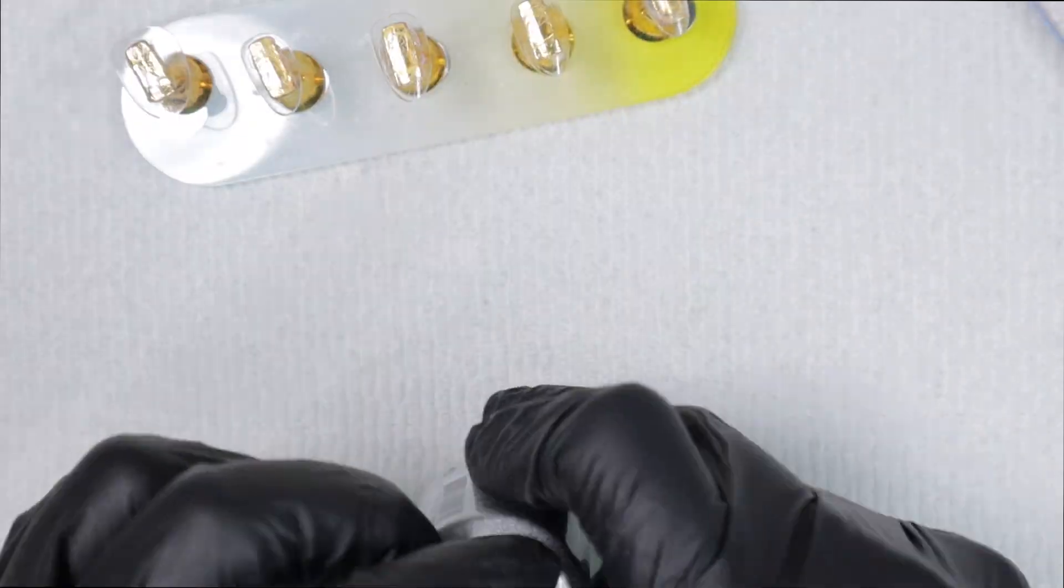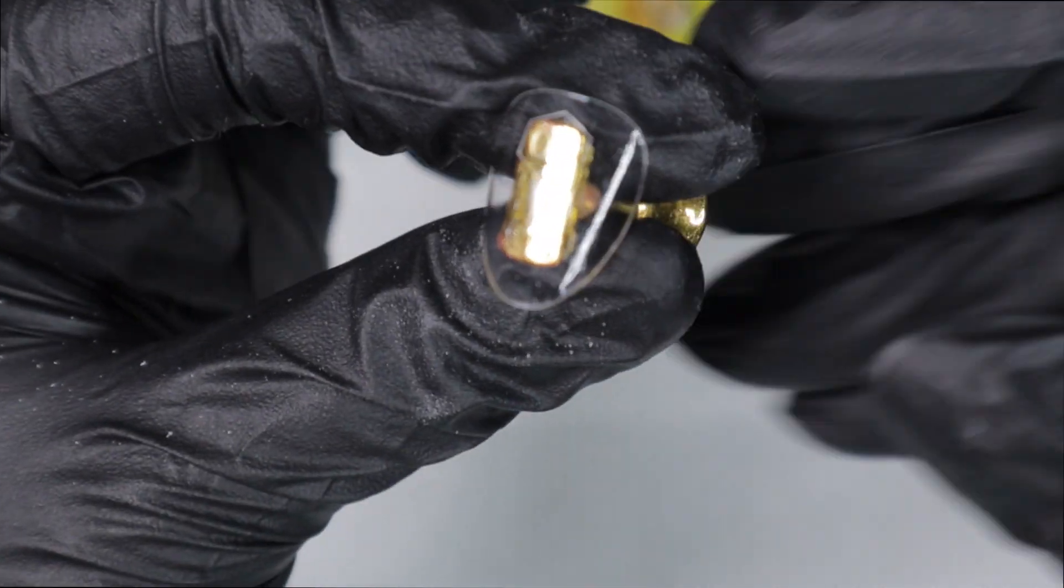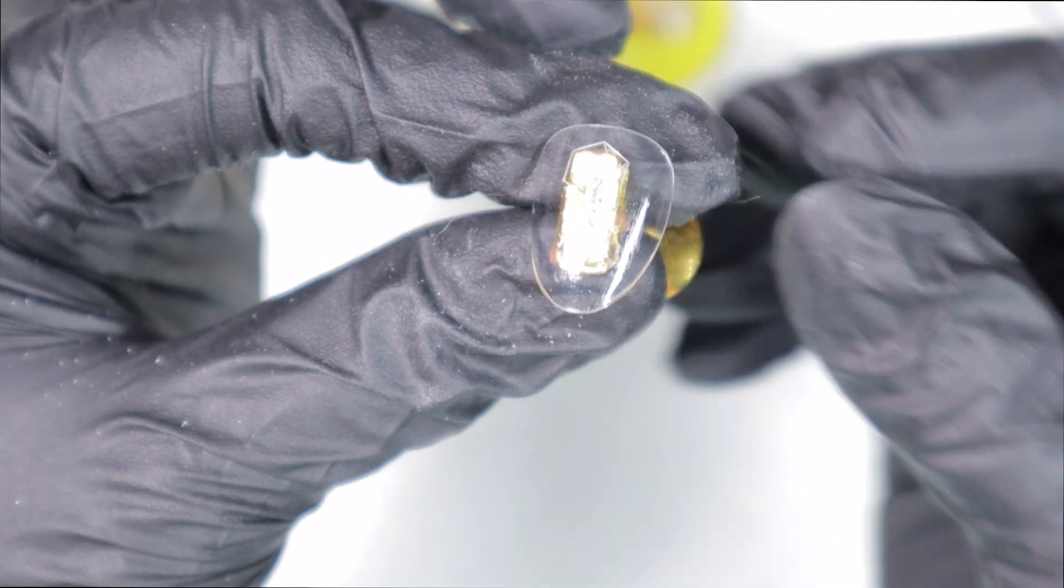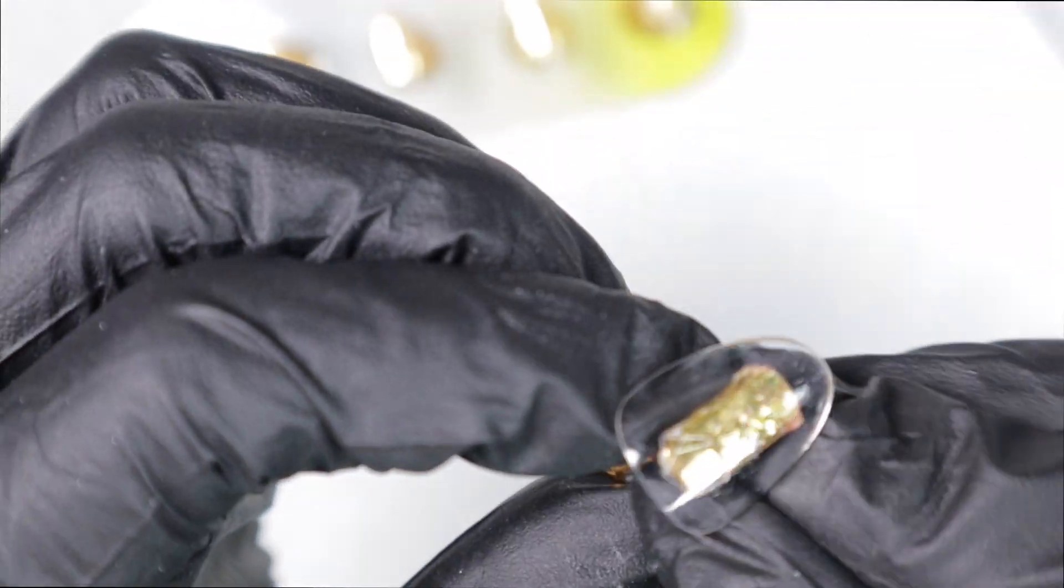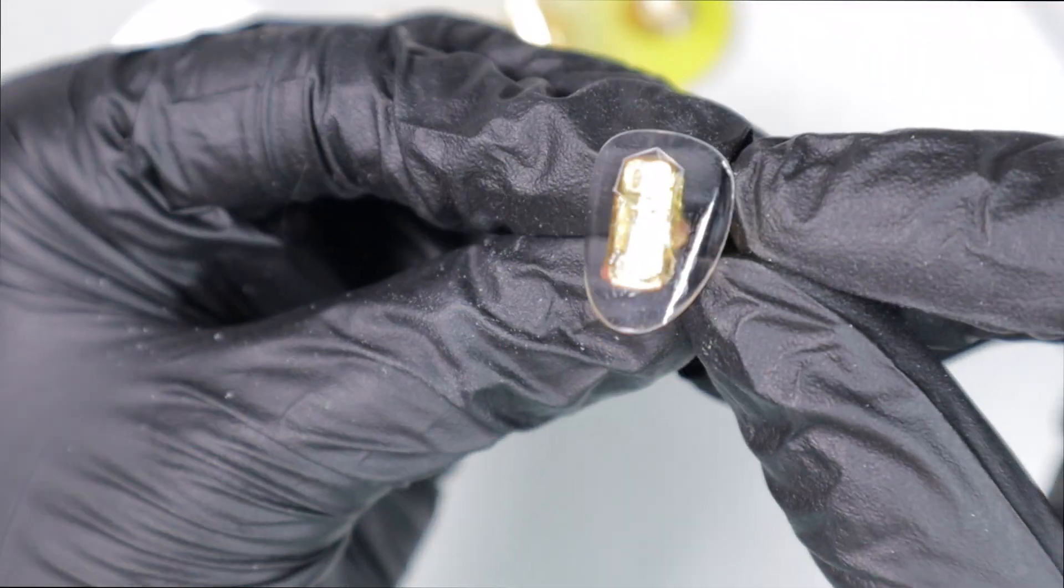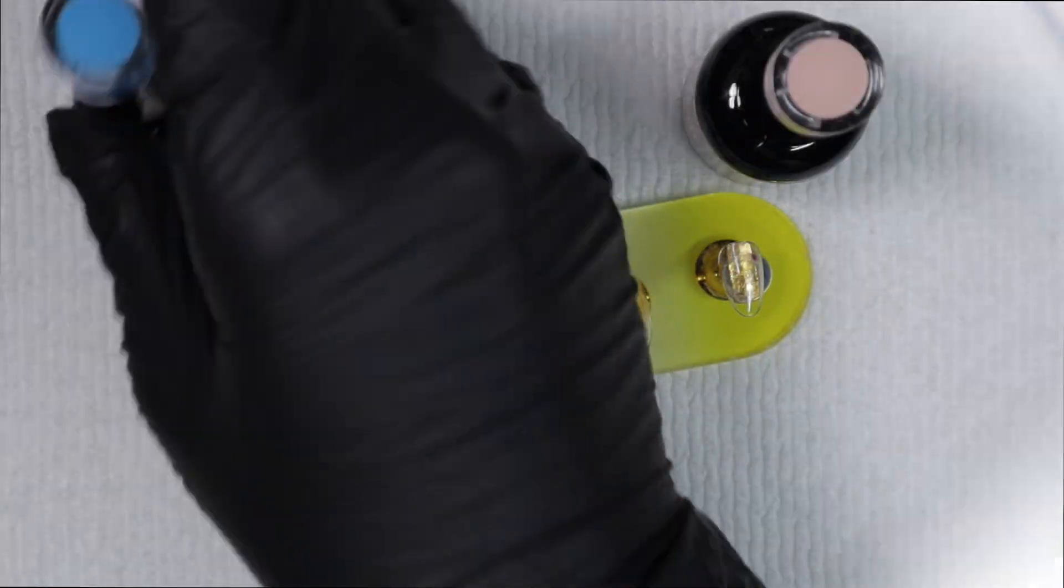If you're doing dip powder over tips, it's really not a step that you have to do, but for gel, gel does not like to stick to smooth surfaces, so having that liquid etch helps the gel stick so much better.